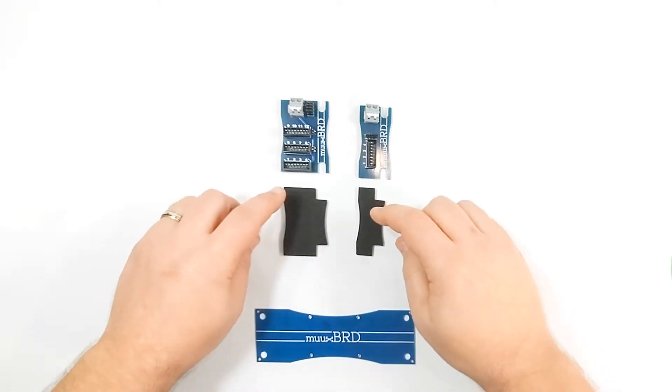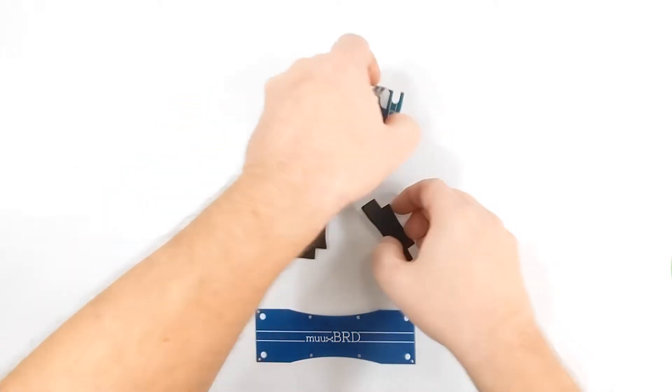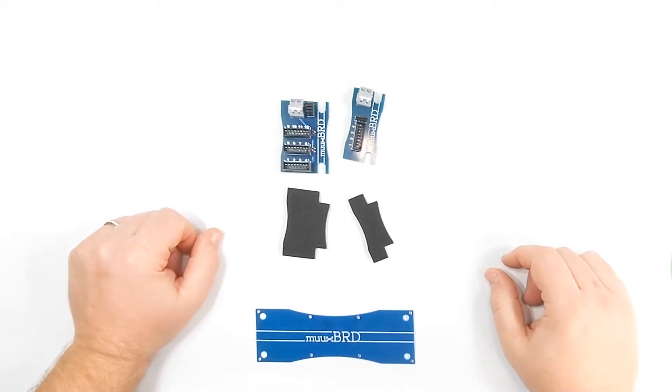I'm now going to be offering a closed cell foam backer. You'll attach this backer with a pressure sensitive acrylic adhesive on the back and that's really just a fancy way of saying that it's like a self-adhesive sticker.